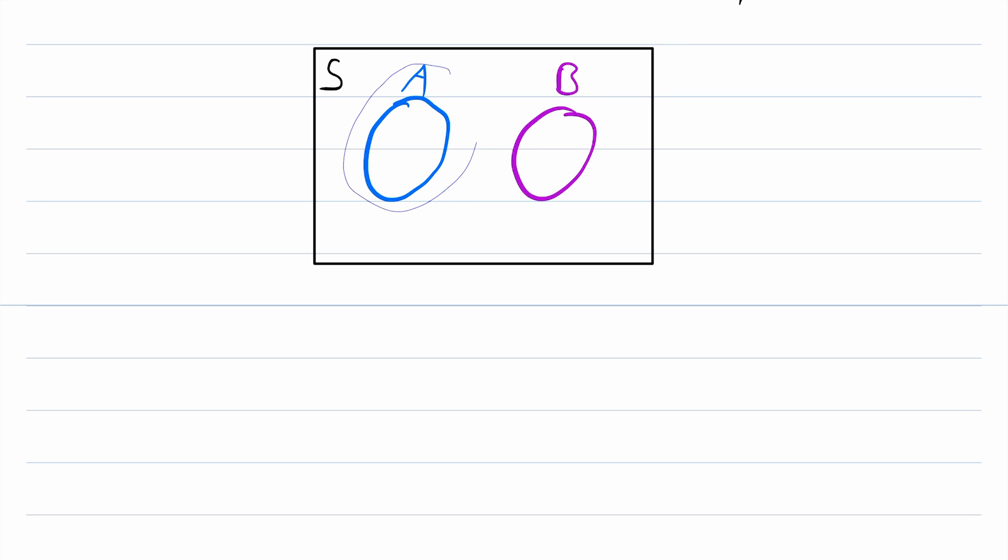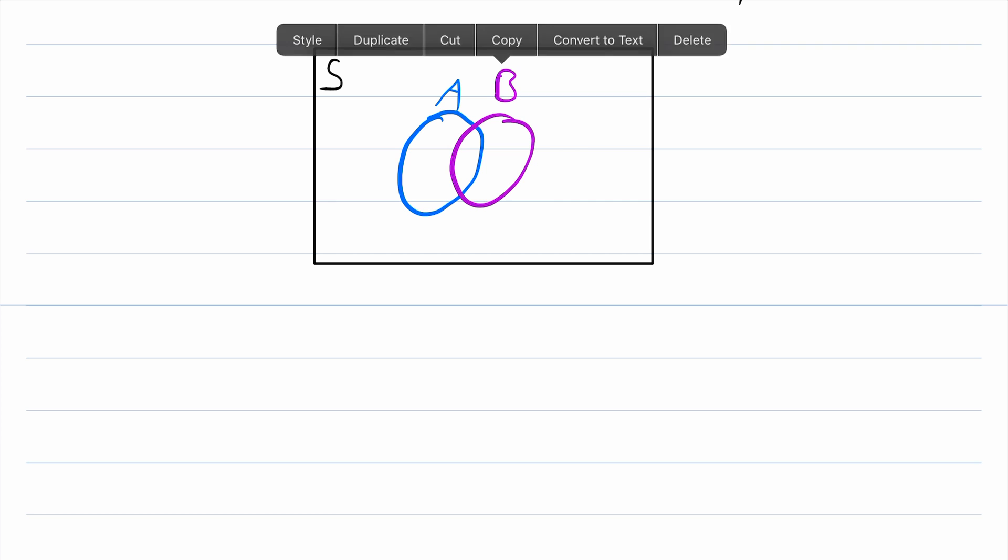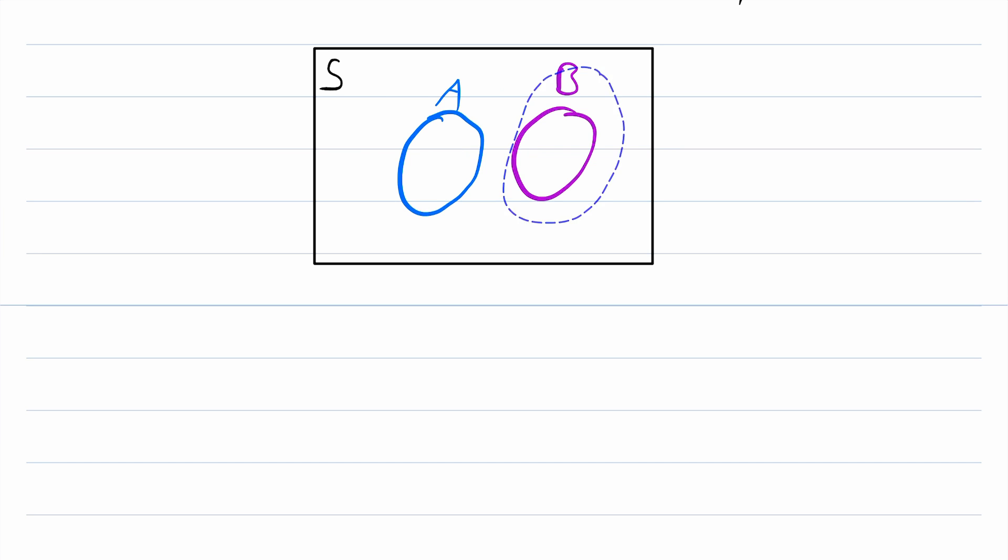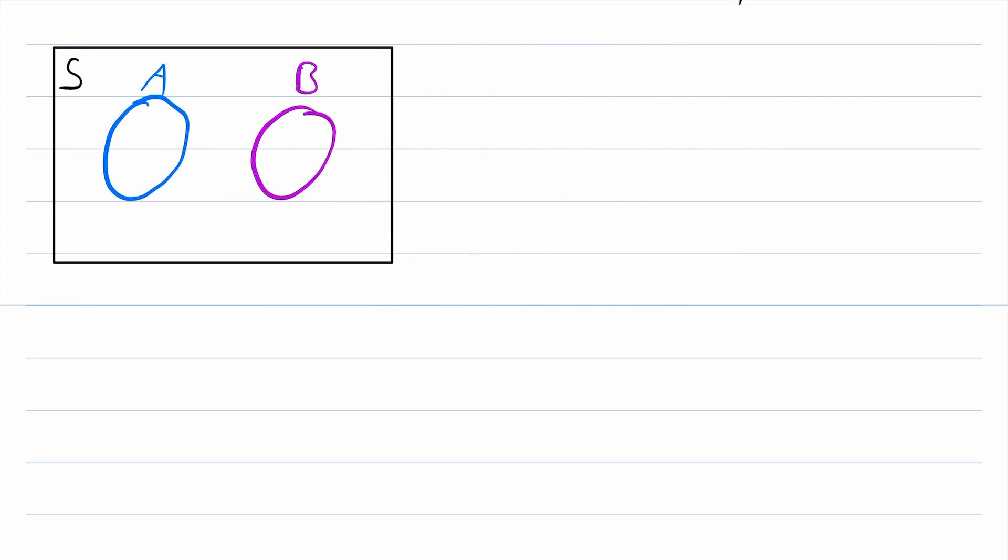Oftentimes, we don't know if two events are mutually exclusive, so we would draw the diagram like this. This drawing leaves open the possibility that the events have some intersection. But if they are mutually exclusive, they don't have any overlap, so we can completely separate them. Now, what does this mean as far as probability goes?